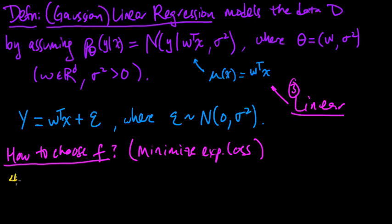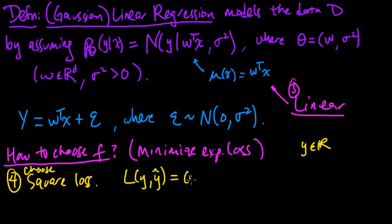Our fourth choice is we'll choose the square loss. And this is in some sense the most natural, since we're doing regression, right? The y's are real valued, and we talked about why square loss is a nice, natural choice in that case. Square loss is just this function L, and it's the square of the difference between your prediction and the true value of y.